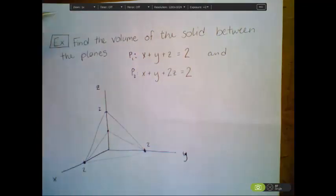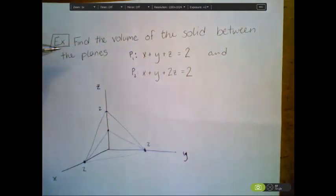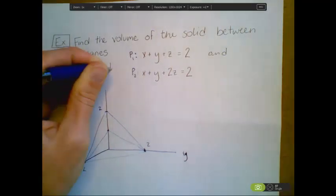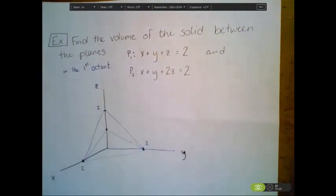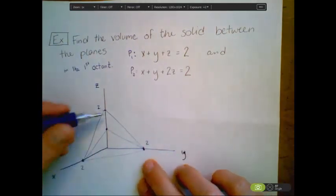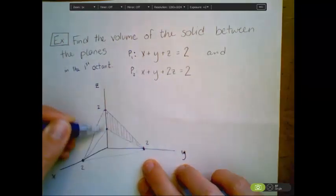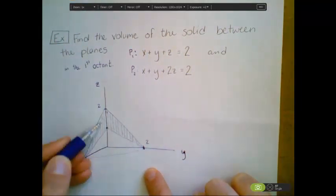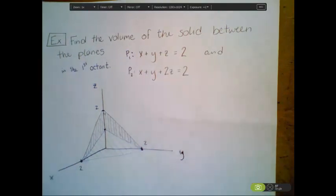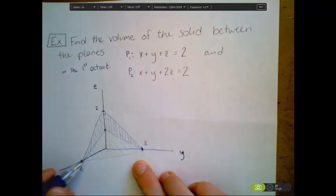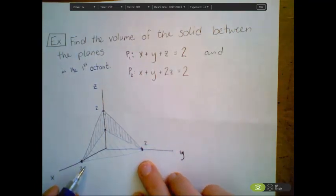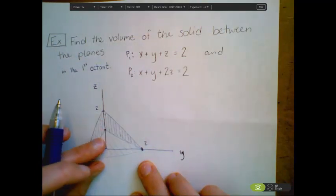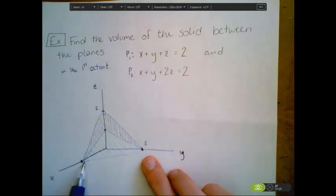We need more information — this should be the volume of the solid between the planes in the first octant. Otherwise, there would be an infinite amount of area between the two planes. But now we've reduced it to just the space trapped between these two pieces: one plane on top and one on the bottom, extending outward — it's sort of like a smushed tetrahedron. We need to find the base of integration and the heights of the two functions.